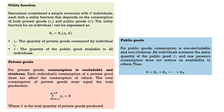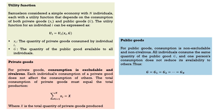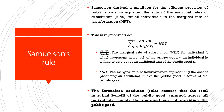Let us summarize what we have done about public goods. We have gone more deeply into the non-rival and non-excludable characteristics. We have understood the utility function of an individual consuming both private and public goods. We understood the Samuelson condition of optimality: the marginal benefit of producing a good should equal the marginal cost — that is when the good has been optimally provisioned.